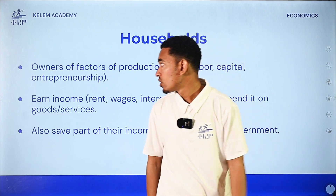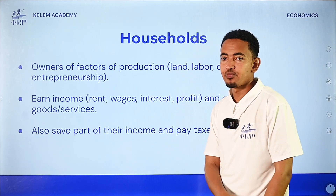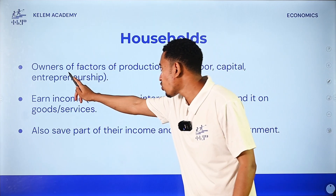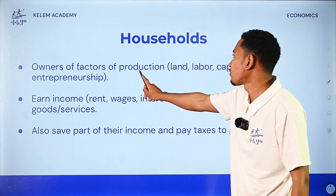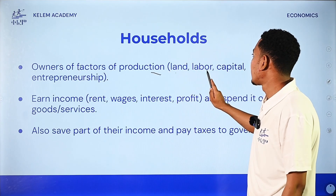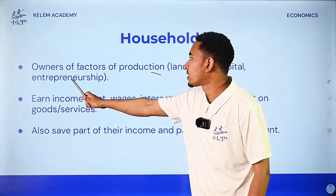The first decision-making unit is the household. The household is the owner of the factors of production: land, labor, capital, and entrepreneurship.